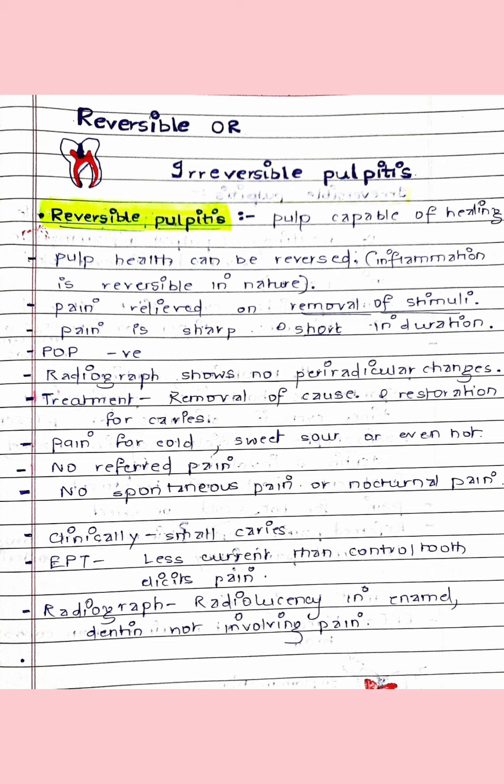In reversible pulpitis, pain occurs on cold food, sweets, and sometimes hot, but usually cold. There is no referred pain and no spontaneous or nocturnal pain, because the caries is superficial. Clinically there is a very small caries lesion. On electric pulp testing, less current is required compared to the control tooth. On radiograph, radiolucency is seen only in the enamel and dentine, not reaching the pulp.